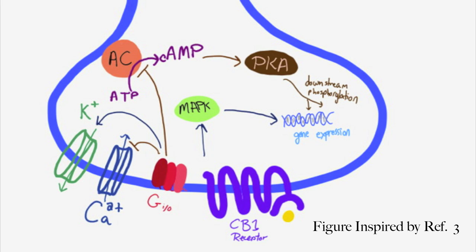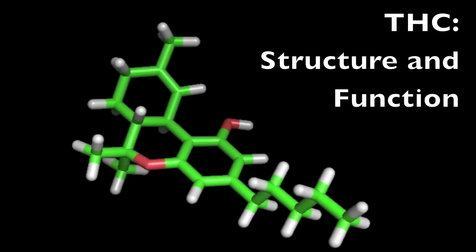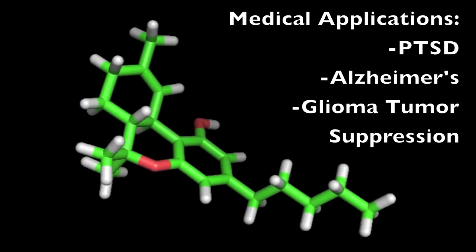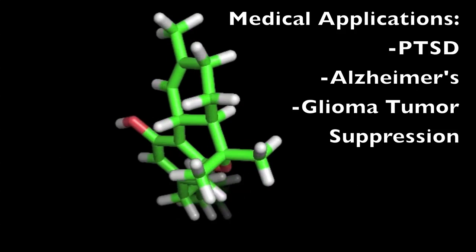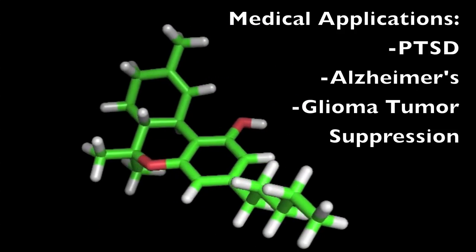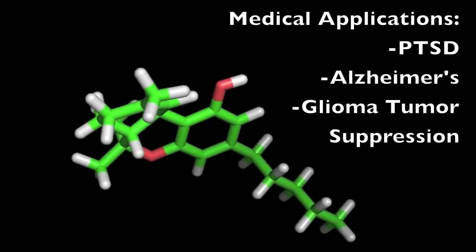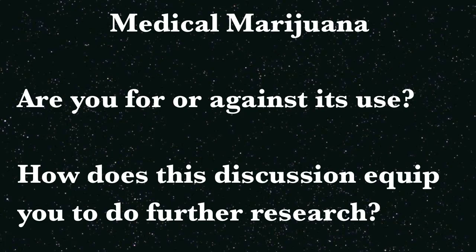This is the mechanism by which THC affects such things as memory, appetite, movement, and thinking. Understanding THC's structure and the pathway that it signals is the first step in understanding how to exploit this chemical for medical use. It has been thought to be potentially helpful in treating a variety of conditions from post-traumatic stress disorder and Alzheimer's to glioma tumors. Understanding how THC affects the brain on the microscopic level may better help us understand the arguments for and against the use of medical marijuana and better equip us to join in the discussion.